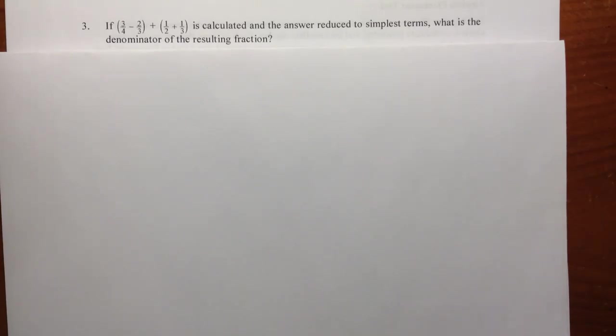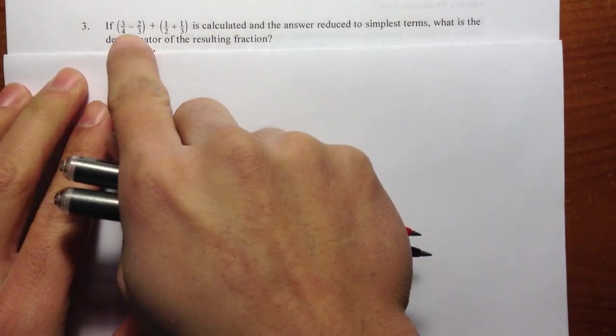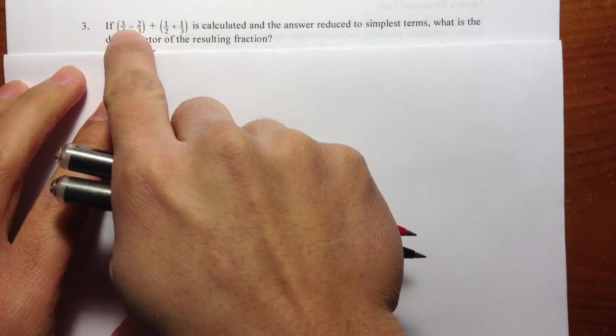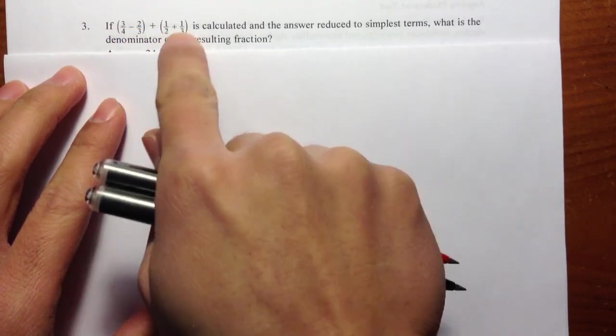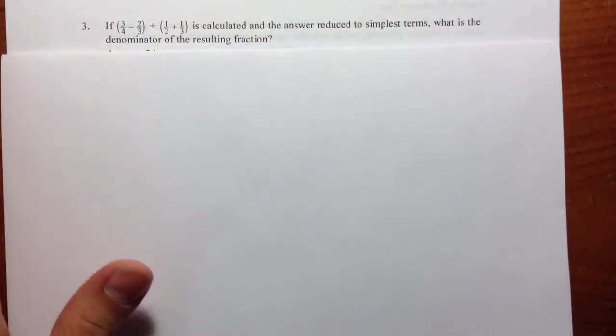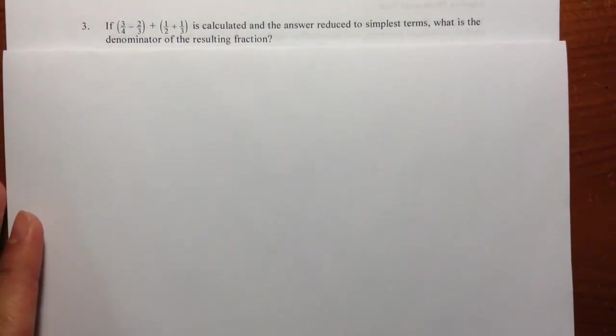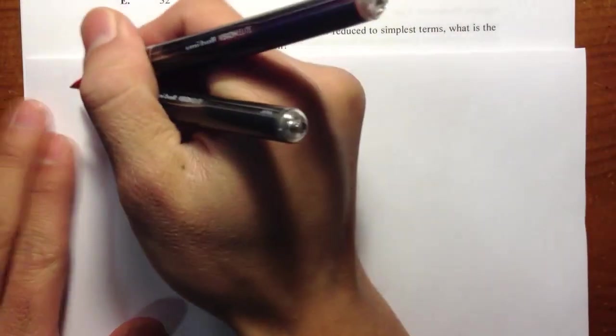We are just going to do the fractions on question number 3. It says that we are going to do 3 over 4 minus 2 over 3 in parentheses, and then plus 1 half plus 1 third. And then we are going to simplify the result if possible. So that's pretty much what question number 3 is saying.